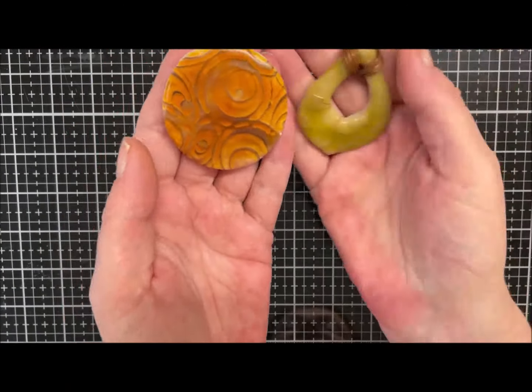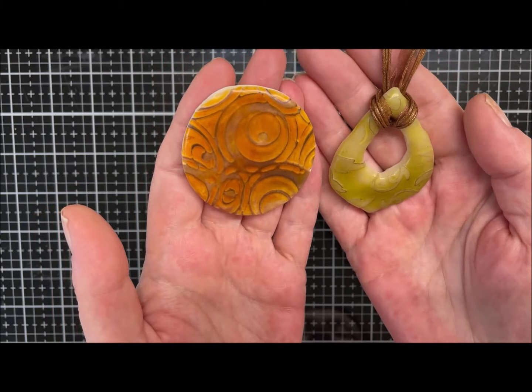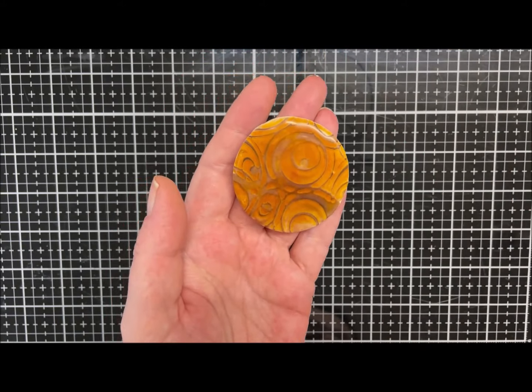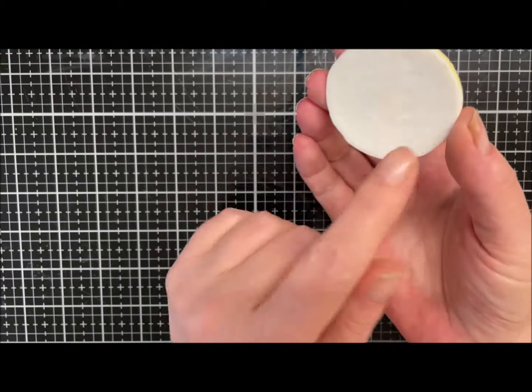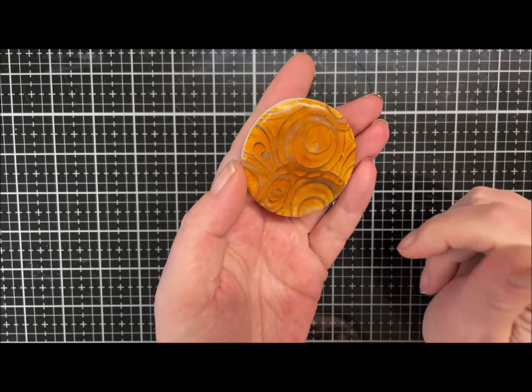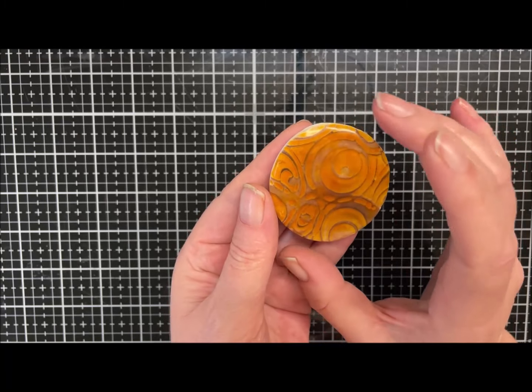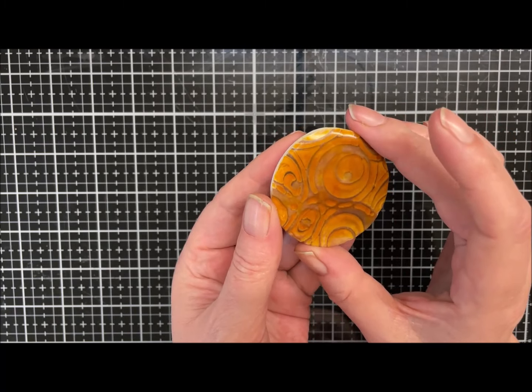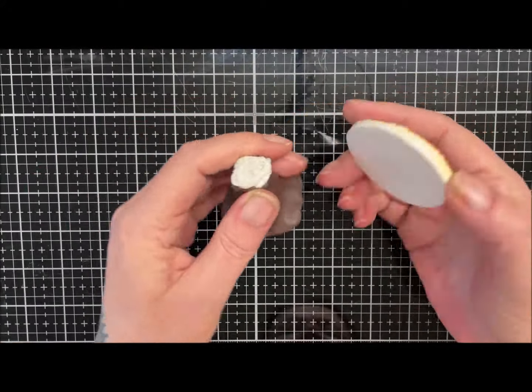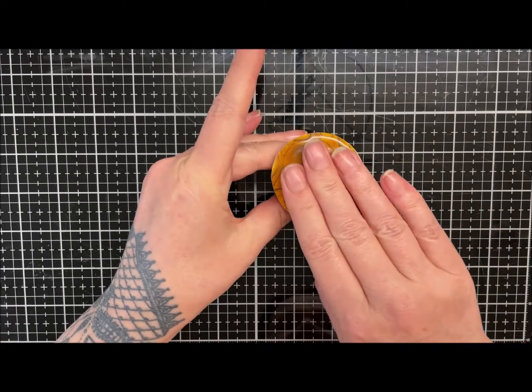So just switching up the colors you use gives you a really different effect, doesn't it. I'm definitely going to be doing a few more of these I think. I'll probably just stick a magnet on this and use it as a fridge magnet. I was wondering whether to just glaze it and see if the shine makes a difference. What do you think? I'll do it. I'll put a bit of UV resin on it just so we can see the difference.